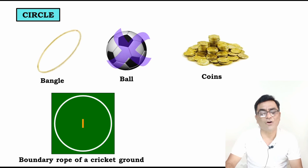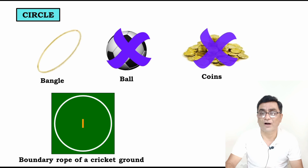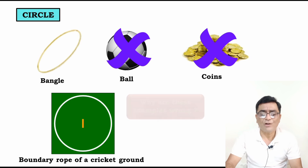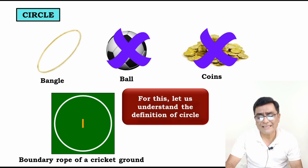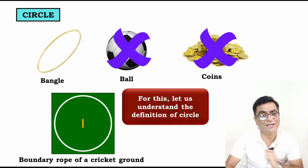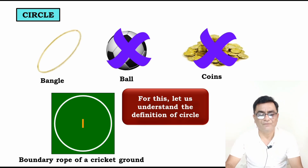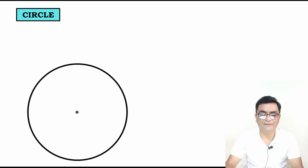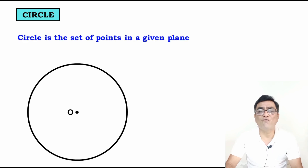Ball is wrong and coins are wrong as examples of a circle. To understand why, let us look at the definition of a circle. A circle is a set of points in a given plane.